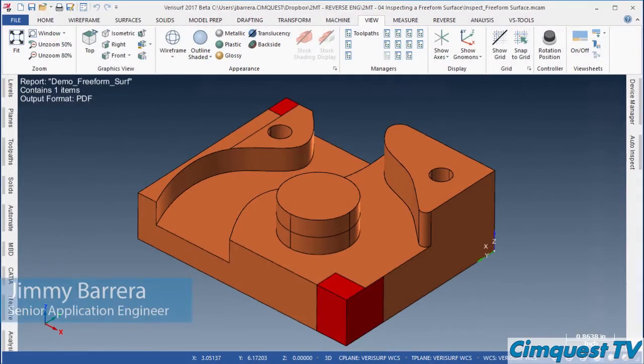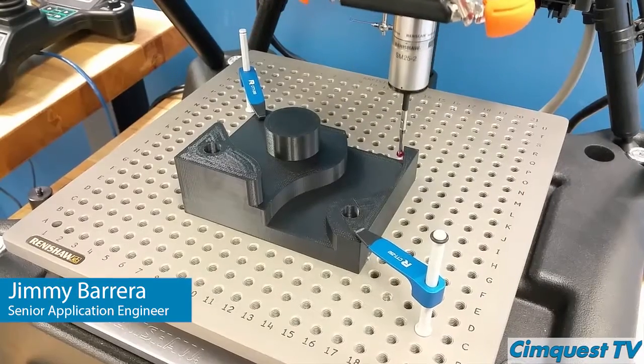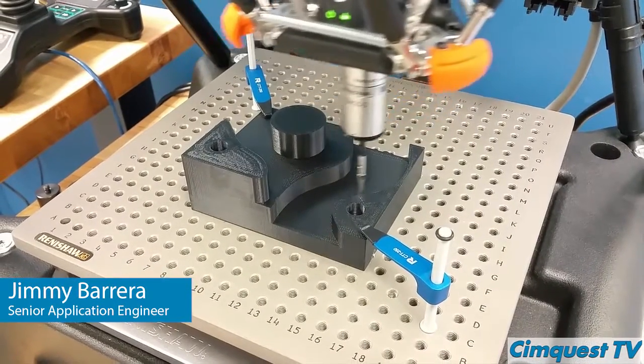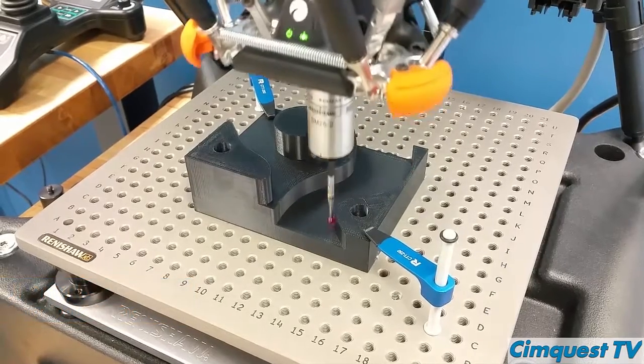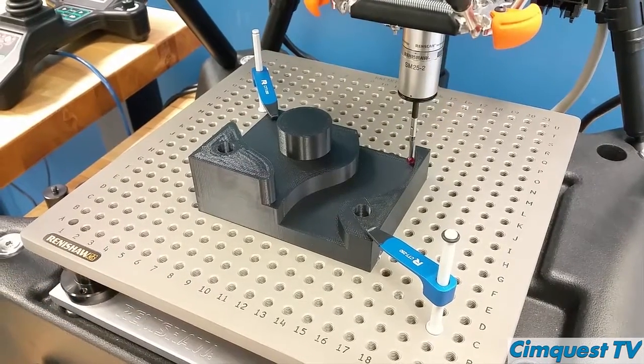Hello everyone and welcome to SimQuest 2 Minute Tuesdays channel. In today's episode I'm going to talk about how to inspect the surface profile of a freeform surface to see if it falls within specified tolerances.